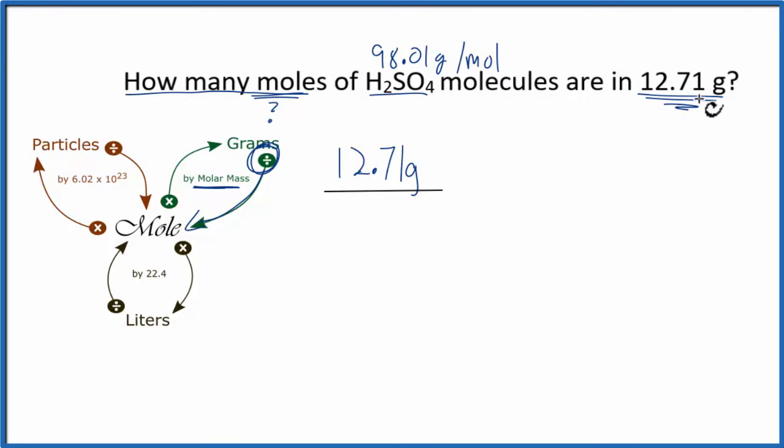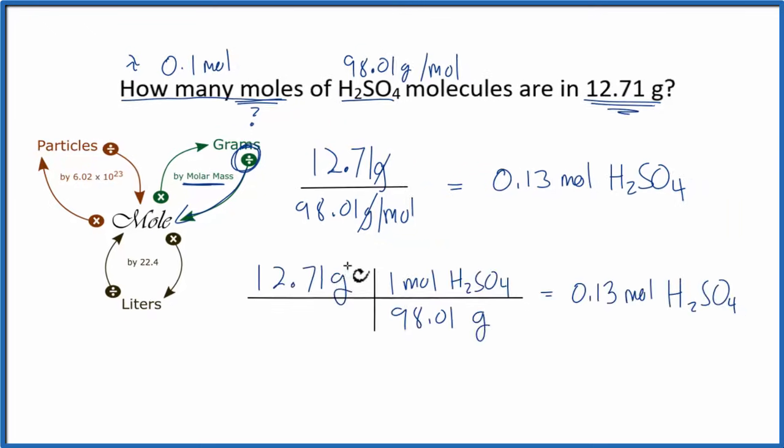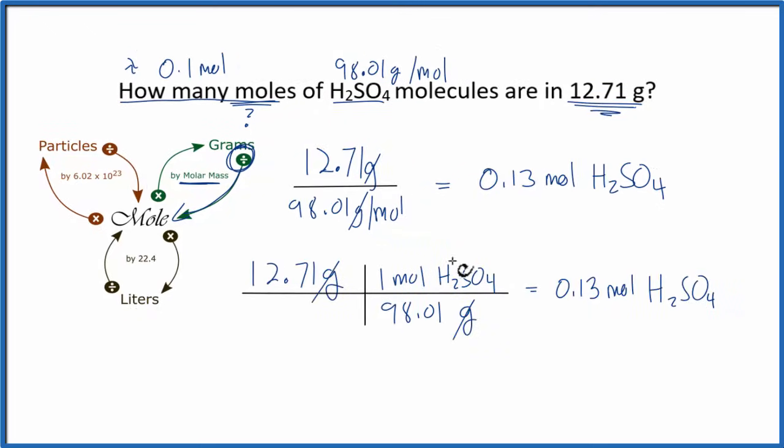So we have about 100 grams in one mole for H2SO4. We're only given 12 grams, so 12 is probably like a tenth, so say 0.1 something moles. That would be a reasonable estimate for what our answer should look like. We divide by the molar mass. We end up with grams cancel out, so we know moles are correct, and 0.13 moles, pretty close to our estimate. Let's set it up using the conversion factor. Note that the grams cancels out, so we know moles. That's what we're looking for. That's what we got.